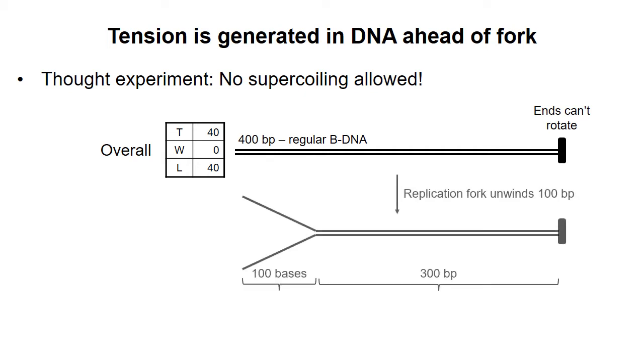Now, imagine that 100 base pairs of this DNA are unwound by helicase. Remember, the ends can't rotate, and we're not allowing supercoiling. Given those conditions, what are the new values of T, W, and L for this 400 base stretch of DNA?